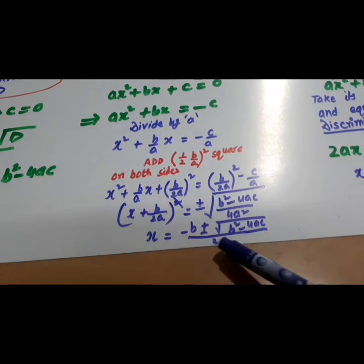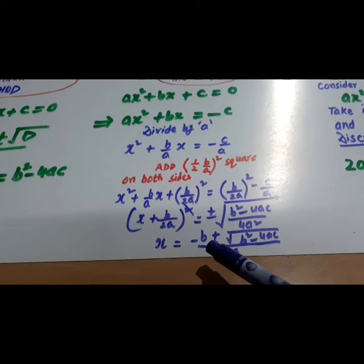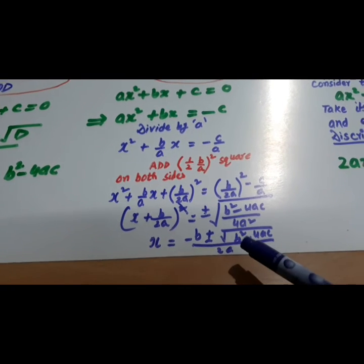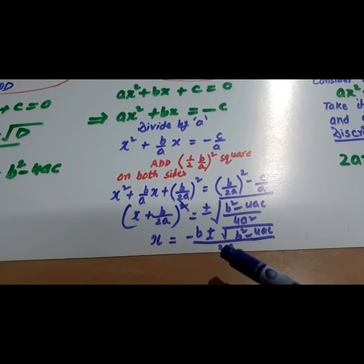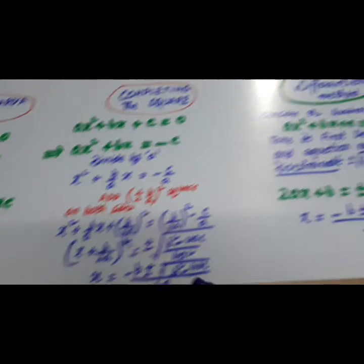And when you take this square root here with plus minus, it becomes x is equal to minus B plus minus B square minus 4AC over square root over 2A.